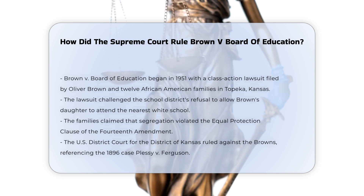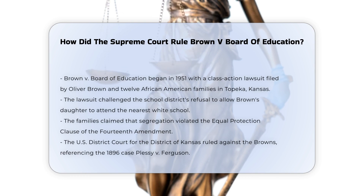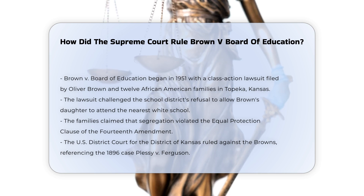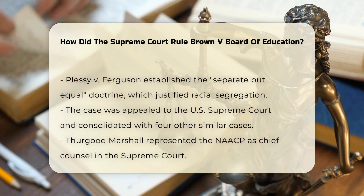The case of Brown v. Board of Education originated in 1951 when Oliver Brown and 12 other African-American families in Topeka, Kansas filed a class-action lawsuit against the Topeka Board of Education. The lawsuit was prompted by the school district's refusal to allow Brown's daughter to attend the nearest white school, instead requiring her to travel to a segregated African-American school. The families argued that the segregation policy was unconstitutional because it violated the Equal Protection Clause of the 14th Amendment.